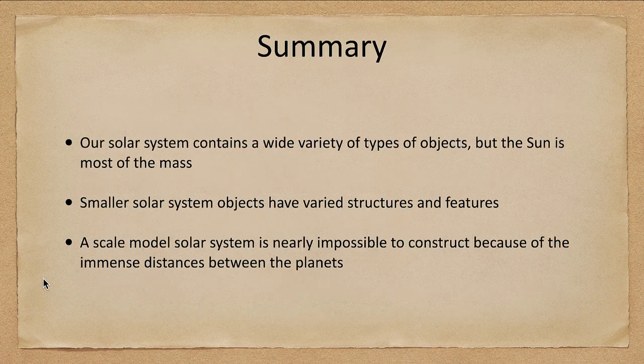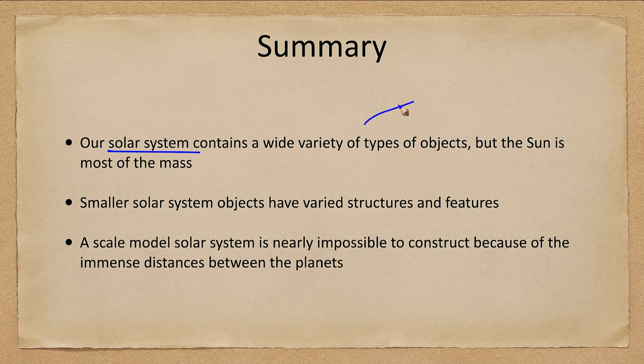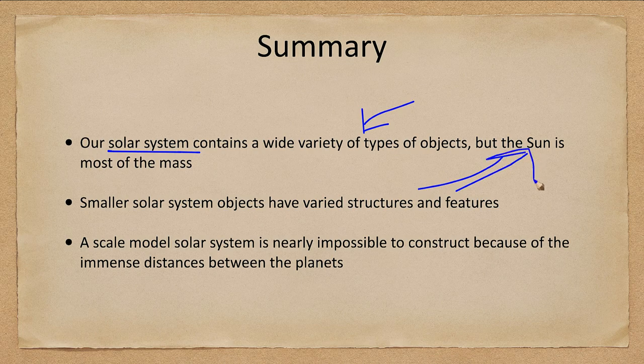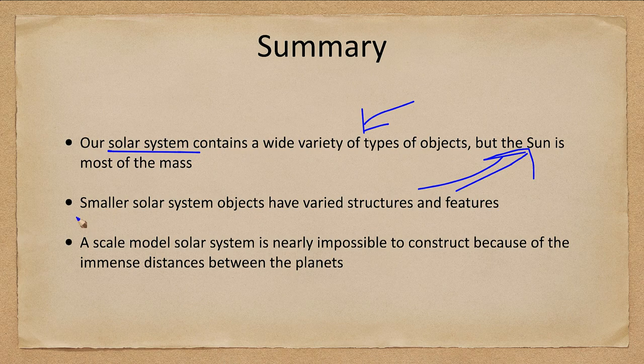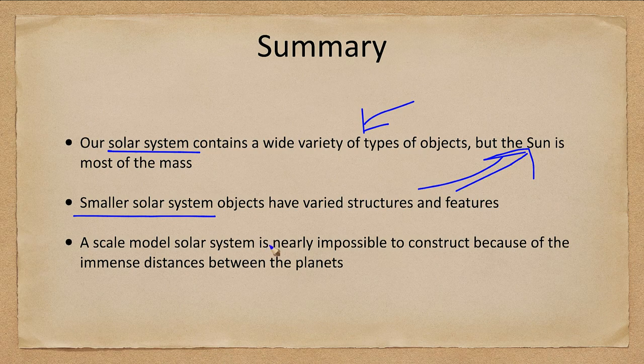So let's go ahead and finish up with our summary. And what we looked at today is that the solar system contains a really a wide variety of types of objects. But where is all the mass? All the mass is in the Sun. That's where almost all the mass of the solar system is. The smaller solar system objects have really varied structures and features, and we'll be looking at that in more detail over the coming chapters.